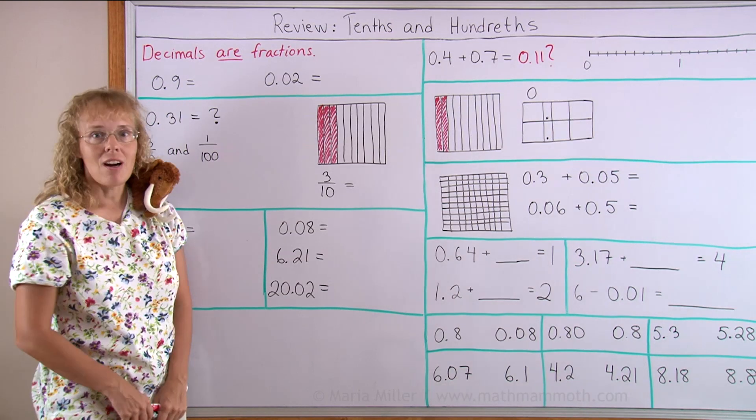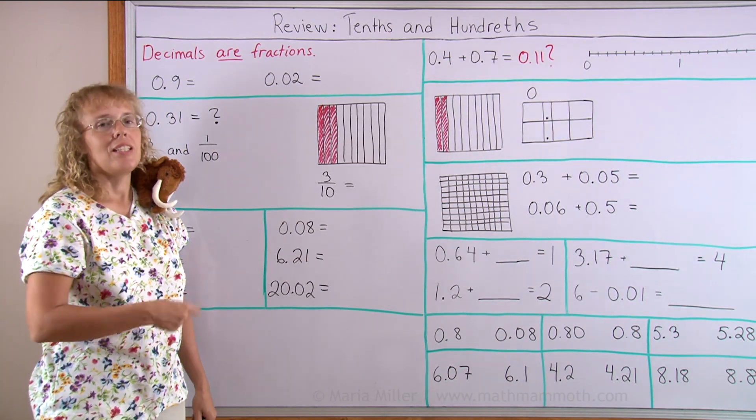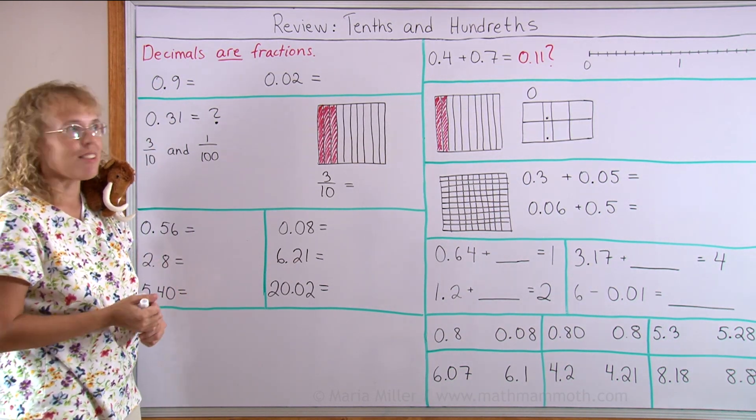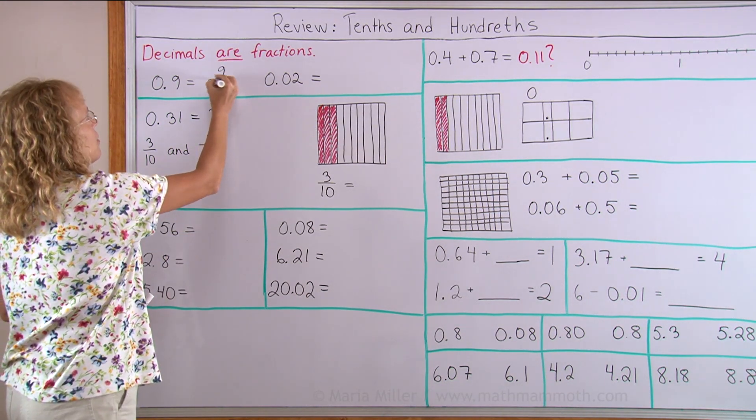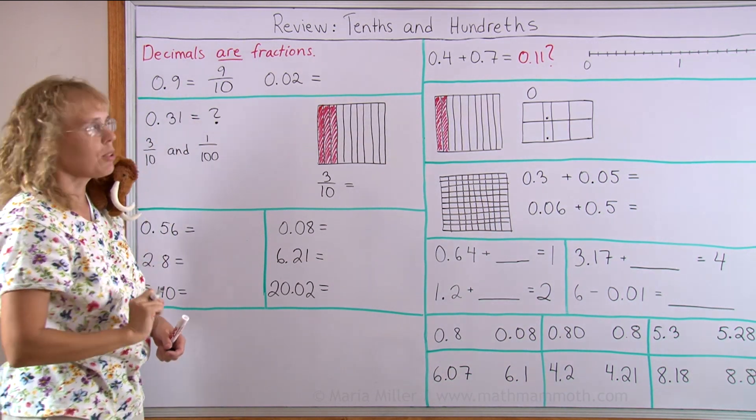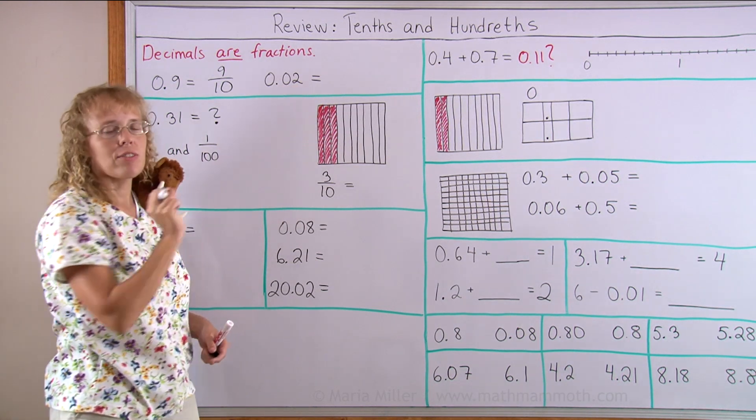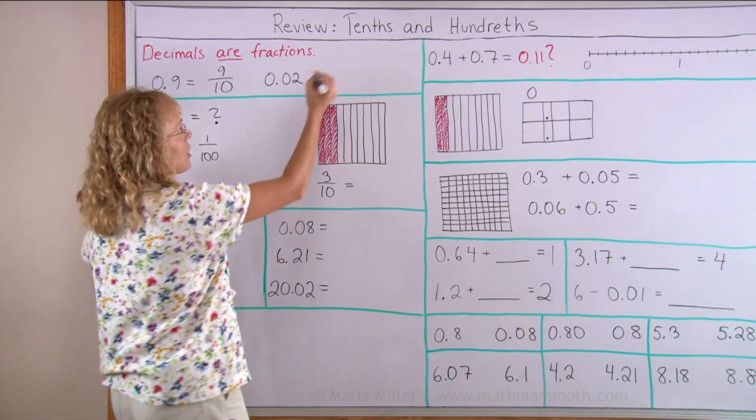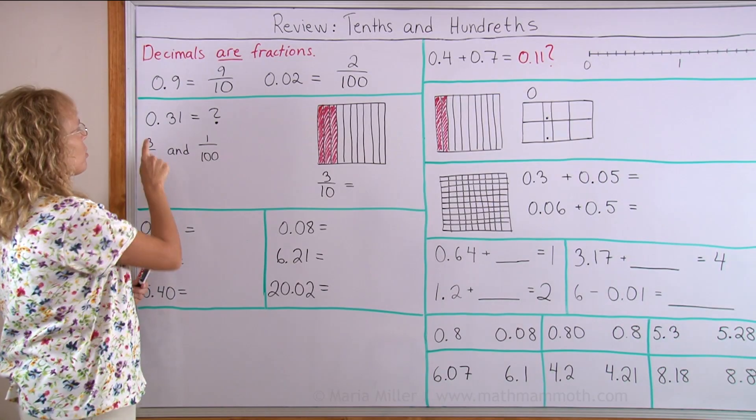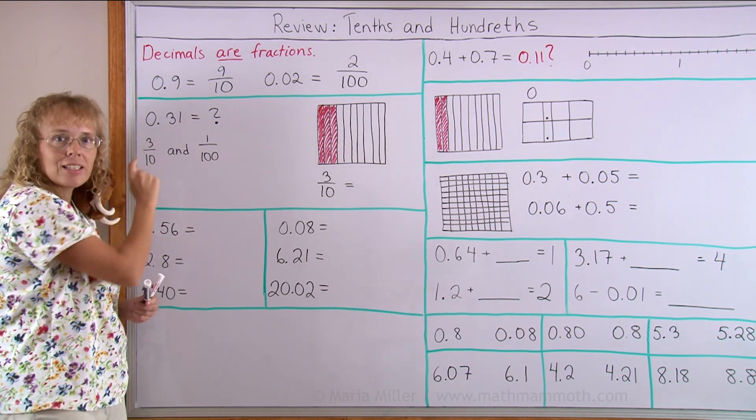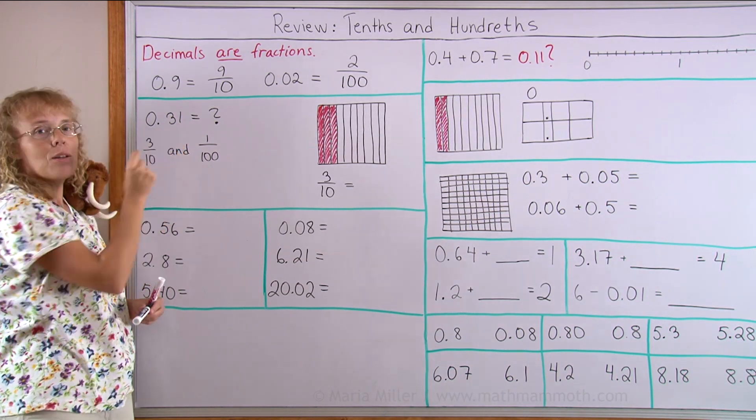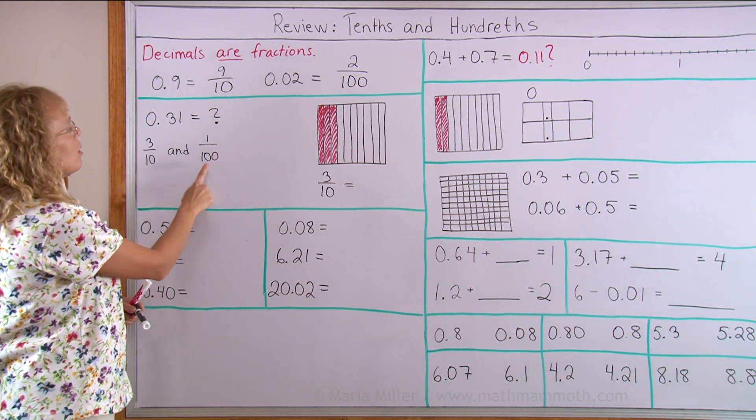First of all, decimals are indeed just fractions, plain and simple. This particular decimal, 0.9, is actually 9 tenths. The first decimal digit after your decimal point tells you how many tenths you have. The second digit after your decimal point tells you how many hundredths you have, so this is 2 hundredths. This particular one is 0.31 and it has 3 tenths and then 1 hundredth.